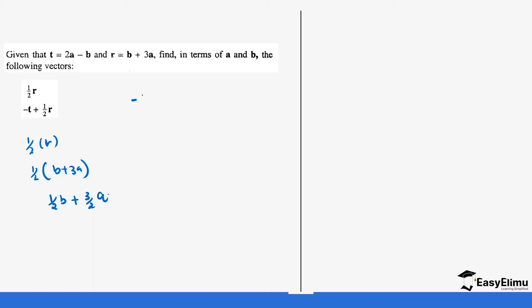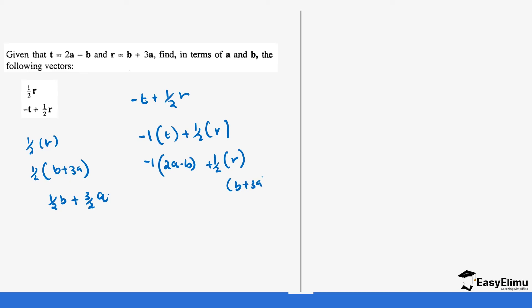The second one is negative t plus ½r. Negative t is the same as negative one into bracket t, plus ½ into bracket r. So this is negative one times (2a minus b) plus ½ times (b plus 3a). This becomes: negative one times 2a gives negative 2a, negative one times negative b gives positive b, then ½ times b gives ½b, and ½ times 3a gives 3/2a.